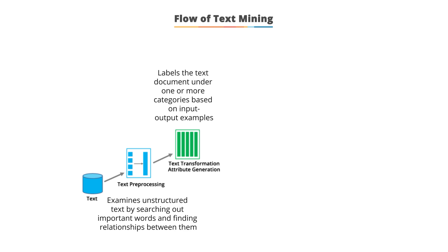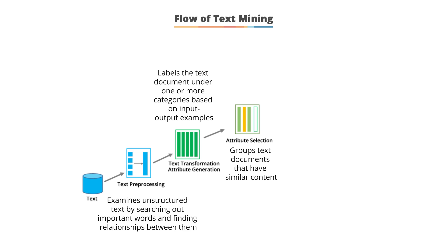Classification of text data is done based on input-output examples with categorization. Third, clustering or attribute selection: the clustering method is used to group text documents that have similar content. Clusters are partitions and each cluster will have a number of documents with similar content. Clustering ensures no document is omitted and derives all documents with similar content.